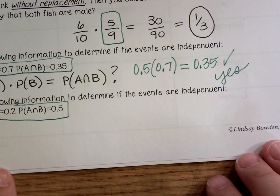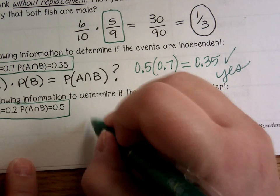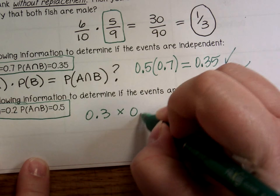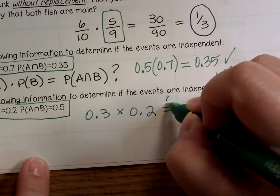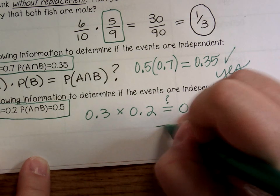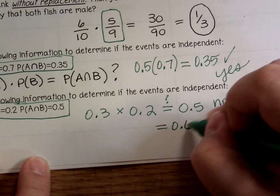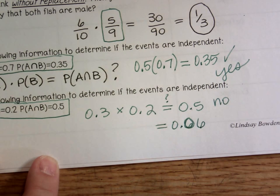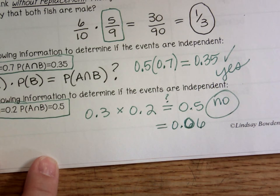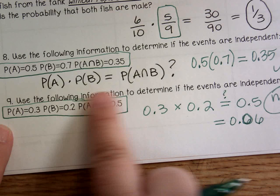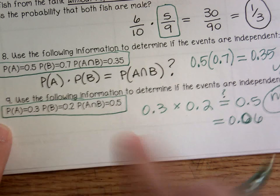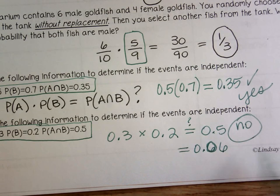I have a feeling, since they gave us one yes, number 9 is going to be a no. Probability of A is 0.3 times probability of B is 0.2 — does that give me 0.5? No, it does not. It would give me 0.06. So that's a no, because the equation does not hold true for these values, and automatically it is not an independent situation.